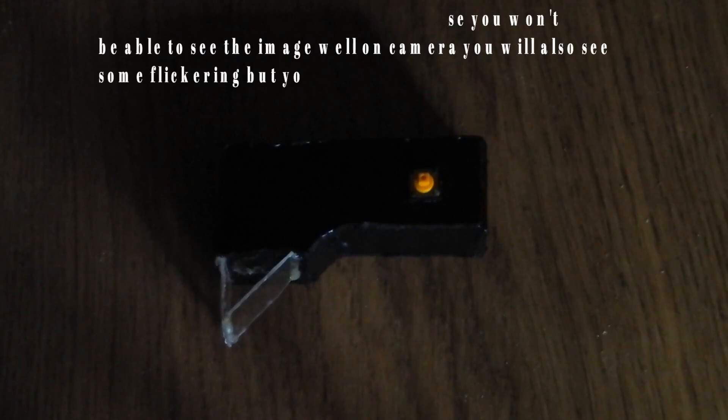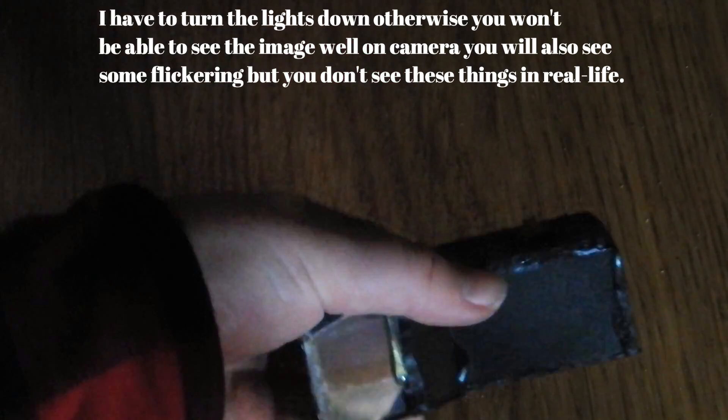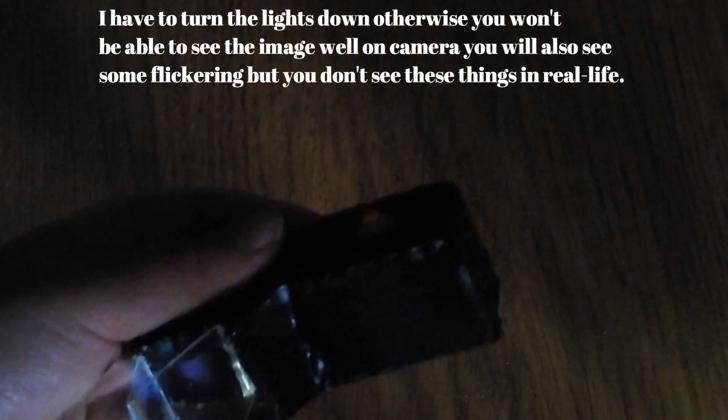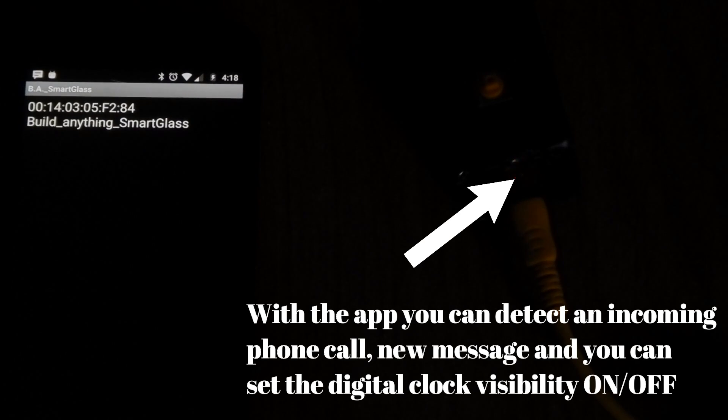The last thing to do is to add two pieces of glass or plastic as shown. Now you can power it with anything that has a USB connection. You can set the time with the button. I can also connect with the app so that I can show incoming phone calls and new messages.